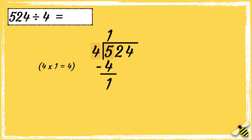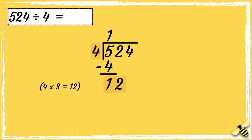We can now bring the second digit down. Now we can work out how many 4s go into 12. 4 times 3 is 12, so 4 goes into 12 three times. We now need to find out what's left over, so 12 take away 12 is 0.